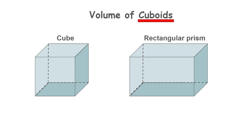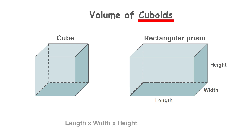The short answer is length multiplied by width multiplied by height. The product of these three factors is the volume of the shape.